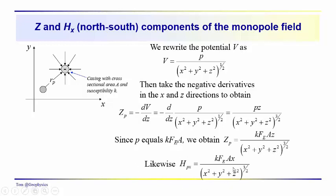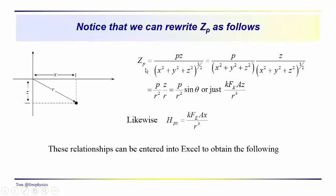And then we can do the same thing for h sub px. So we can rewrite z sub p, the vertical component here, associated with an anomalous field intensity pointing towards the pole. So we can take out a z over x squared plus y squared plus z squared to the one-half power. And this turns out just to be the sine of theta. And x squared plus y squared plus z squared is just r squared. So we have p over r squared times z over r is equal to p over r squared times the sine of theta or just k f sub a times z over r cubed.